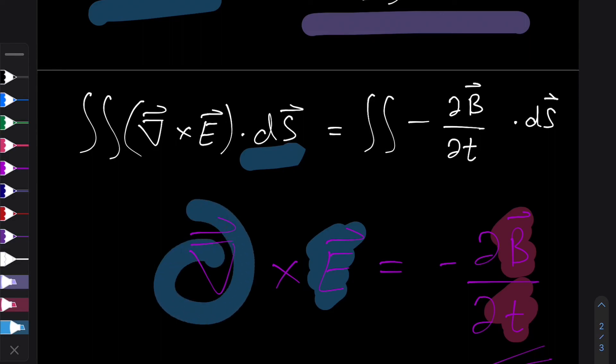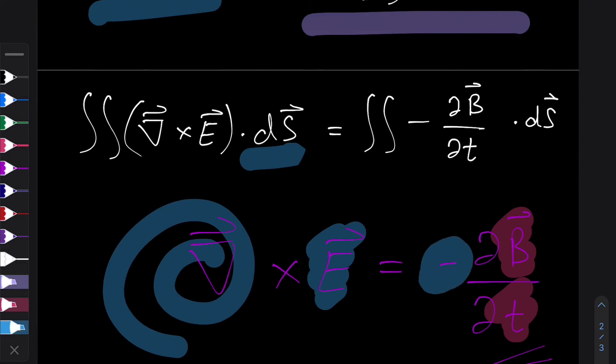such that the curl, so how much it sort of spirals or spins around a point of that electric field is in the opposite direction to the rate of change of the magnetic field.